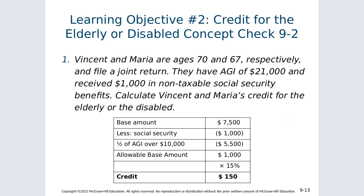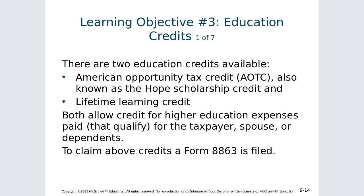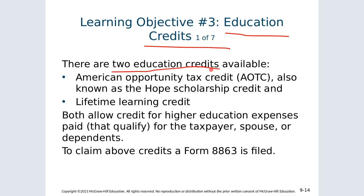Education credits are beneficial for students paying tuition (net of scholarships). There are two credits: the American Opportunity Tax Credit (AOTC), which is refundable, and the Lifetime Learning Credit. To claim either, you file Form 8863. Qualifying expenses include tuition, fees, and books — but not room and board — from an accredited institution.